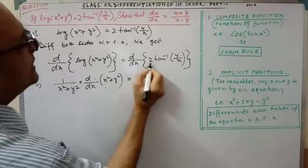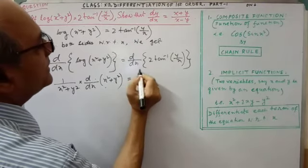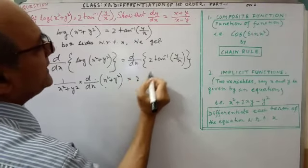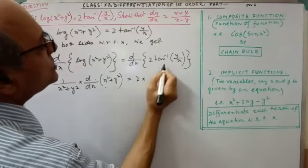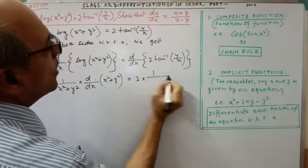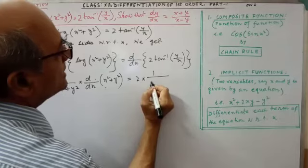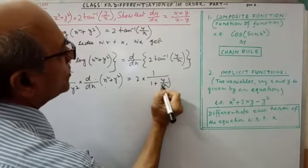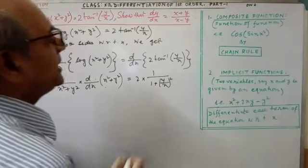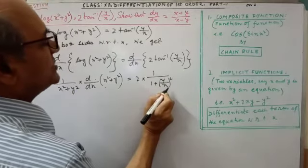Next, 2 will come outside of the differentiation. Tan inverse. Differentiation of tan inverse, that is, 1 by, that is, 1 plus y by x whole square. And here also, you have to apply the chain rule.